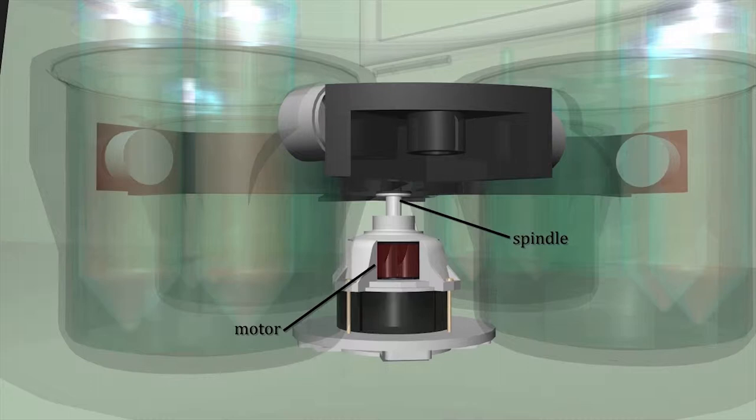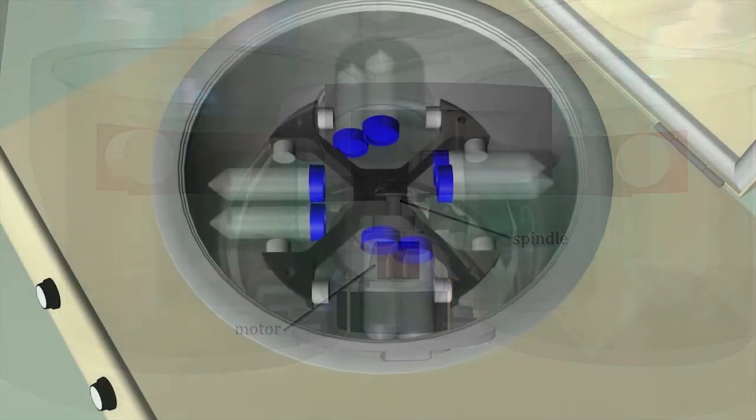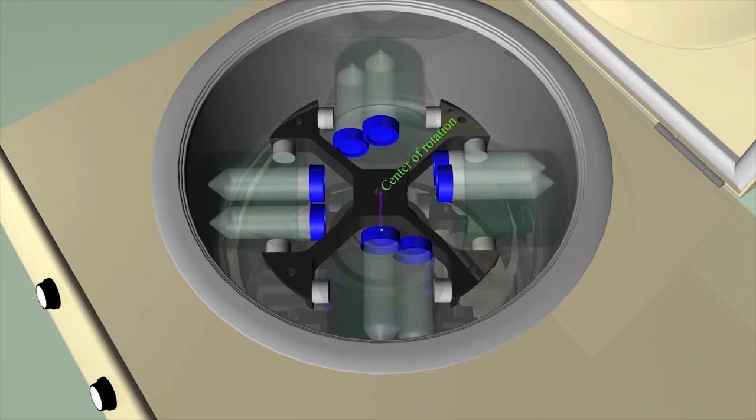The amount of force generated also depends on how far the particles are from the center of rotation. The center of rotation is the center of the spindle. The farther away we move from the center, the greater the force at a given speed of rotation given in rpms or revolutions per minute. We call this distance the radius of rotation depicted by the small letter r.